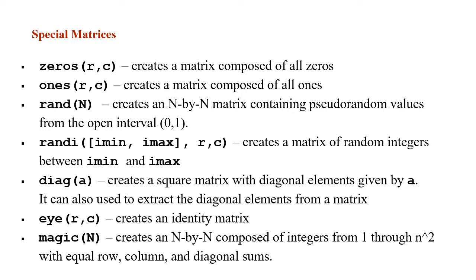Moving on, the function diag takes an array of the diagonal of a square matrix that you want to create. To learn more, experiment with it using MATLAB — just type diag and then an array of random numbers. You will find out that diag creates a square matrix whose diagonal is given by the elements in the array A.